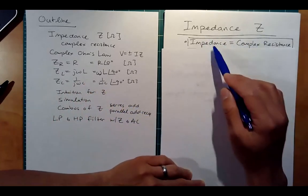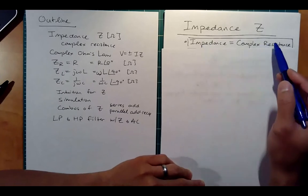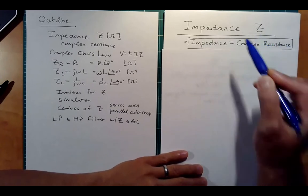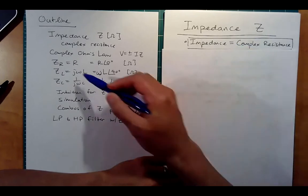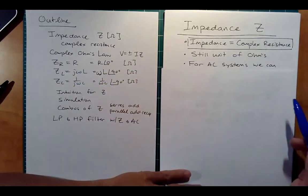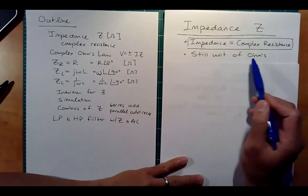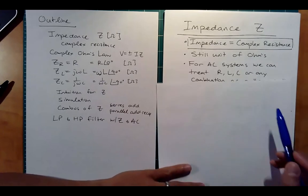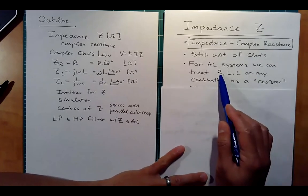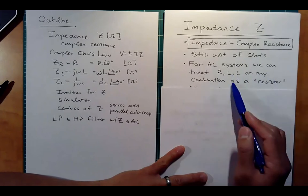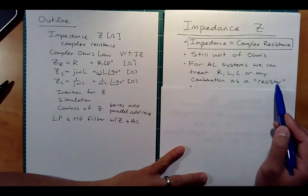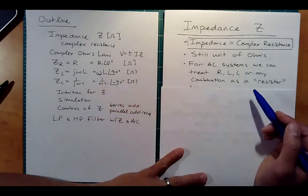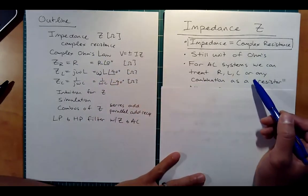Impedance Z is complex resistance. It can be built with a combination of resistors, inductors, and capacitors. It's still units of ohms, and later we'll do a unit check just to make sure. We can treat a resistor, inductor, capacitor, or any combination of these three as a resistor — that's the beauty of all this complex math and the AC waveforms.